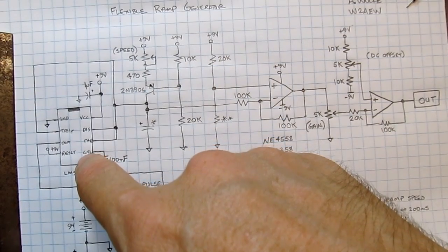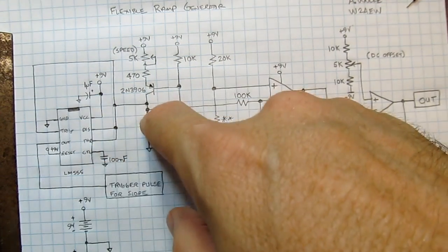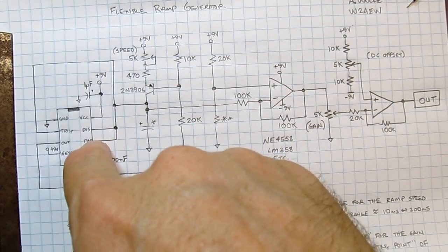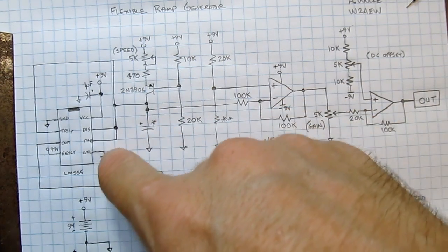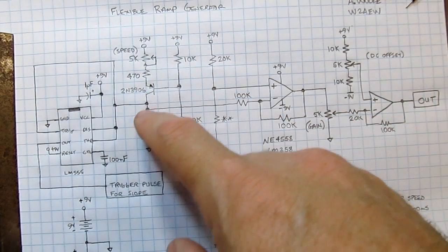The 555 timer circuit takes care of allowing that charge to happen and then discharging the capacitor, just by connecting the trigger and the threshold together and the discharge together right to that cap. So this will allow the capacitor to charge up and drop down.